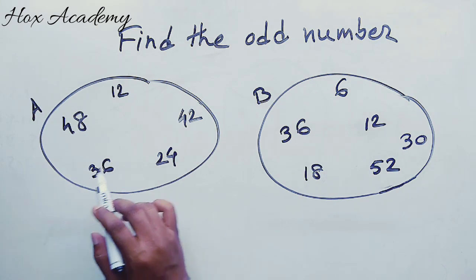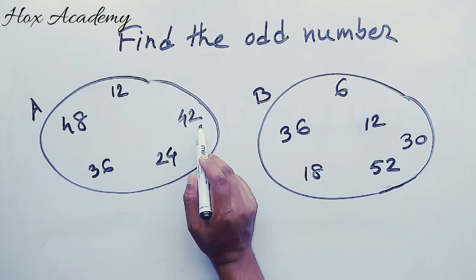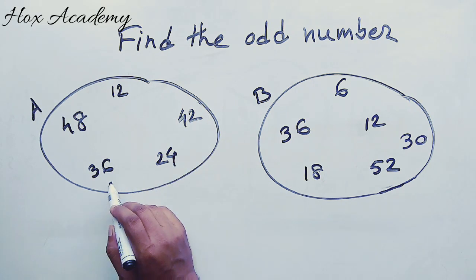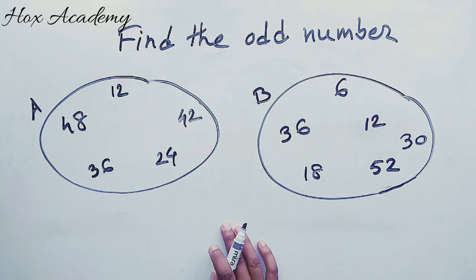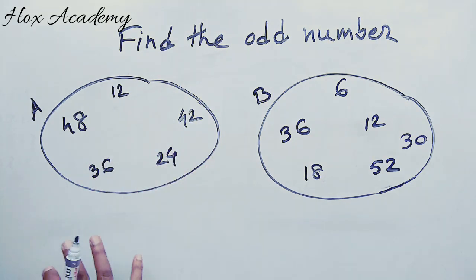In set A, we have 12, 42, 24, 36, and 48. We need to find which number is the odd one.